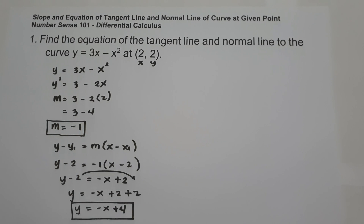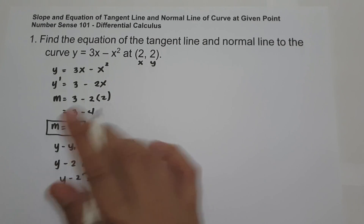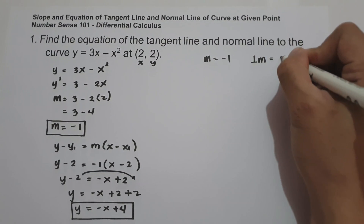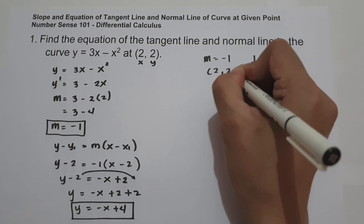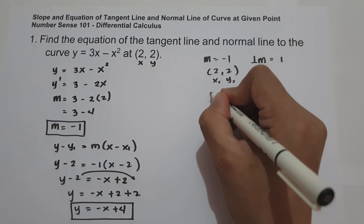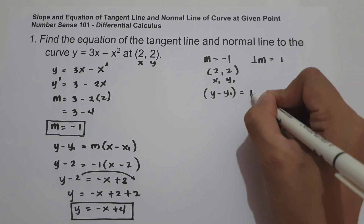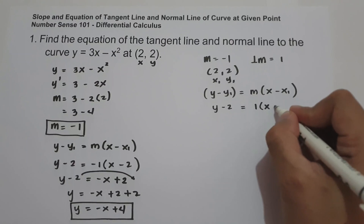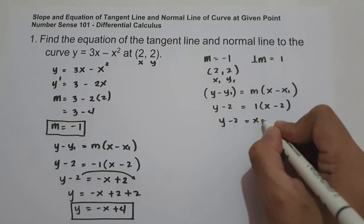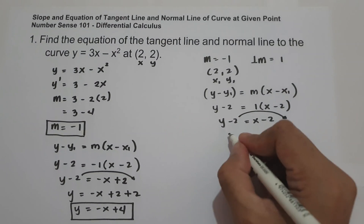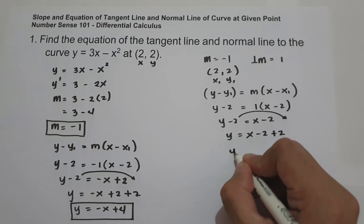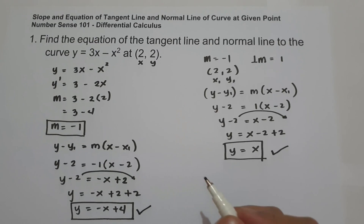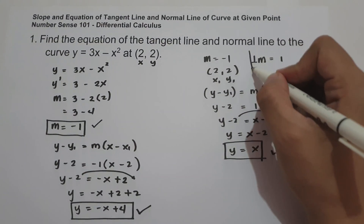For the normal line, we get the perpendicular slope of the given slope. Since the slope is negative 1, the negative reciprocal is positive 1. Using point-slope form with point (2, 2): y minus 2 equals 1 times x minus 2, giving y minus 2 equals x minus 2, so y equals x. That is the equation of the normal line.